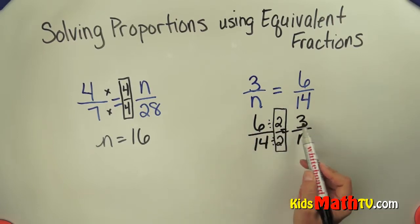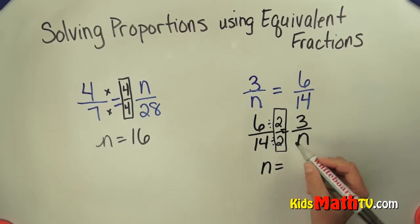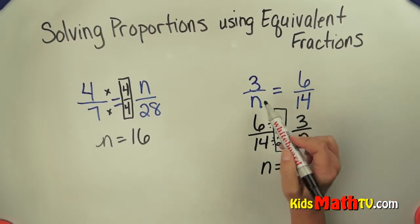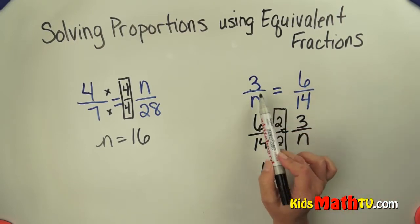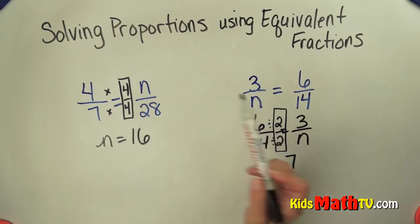So 6 divided by 2 is 3, and 14 divided by 2 gives me n. 14 divided by 2 is 7. To solve for an unknown quantity in a proportion, you can see if you can make equivalent fractions. That's the end of our lesson on solving proportions using equivalent fractions.